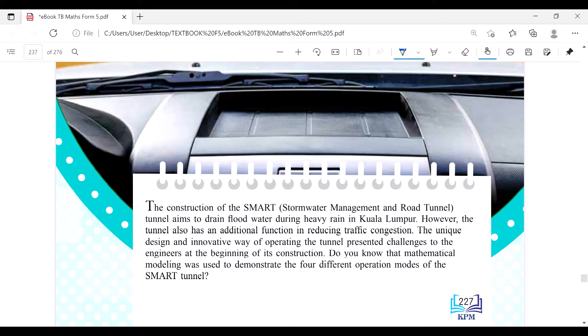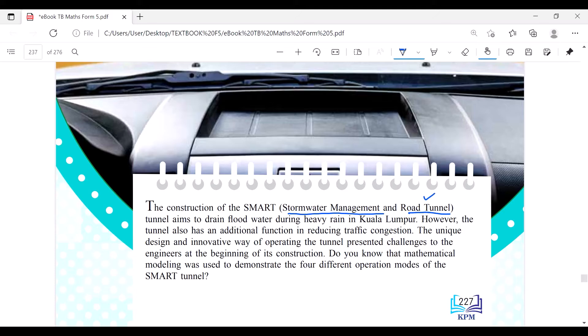Actually, it is the Storm Water Management and Road Tunnel, called SMART. It is used for the road, but actually it's used for water management. The tunnel aims to drain flood water during heavy rain. However, the tunnel has an additional function in reducing traffic congestion. You can use it as an extra alternative road underground. That's amazing for us, but in most countries they have this tunnel road tunnel and storm water management.